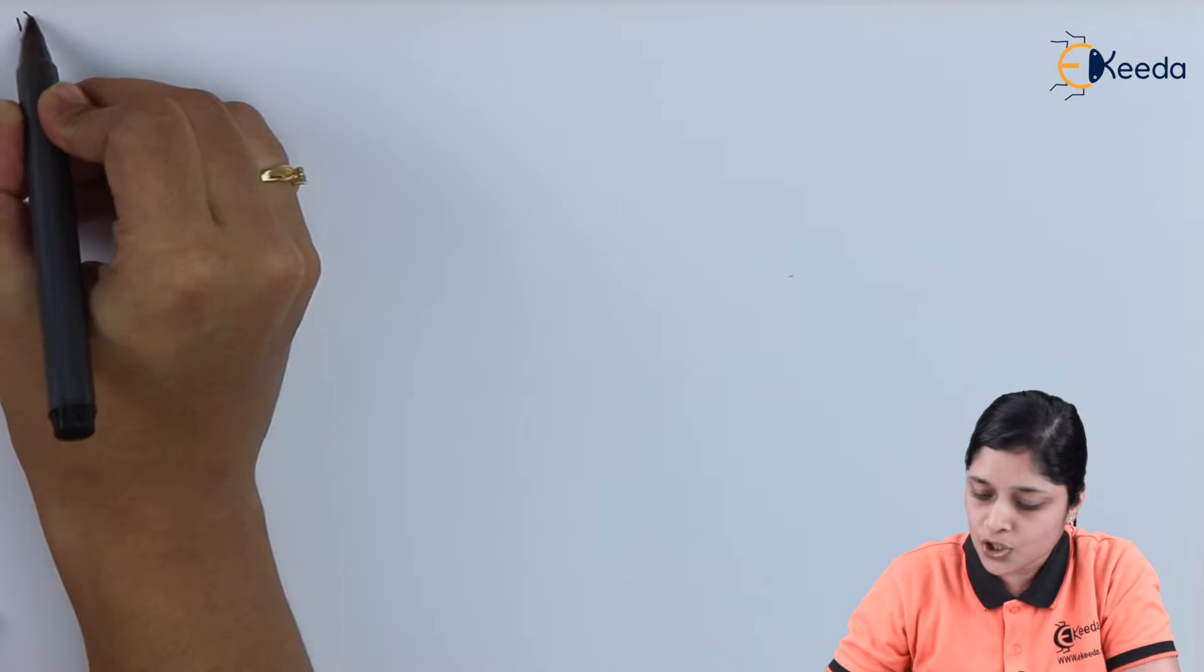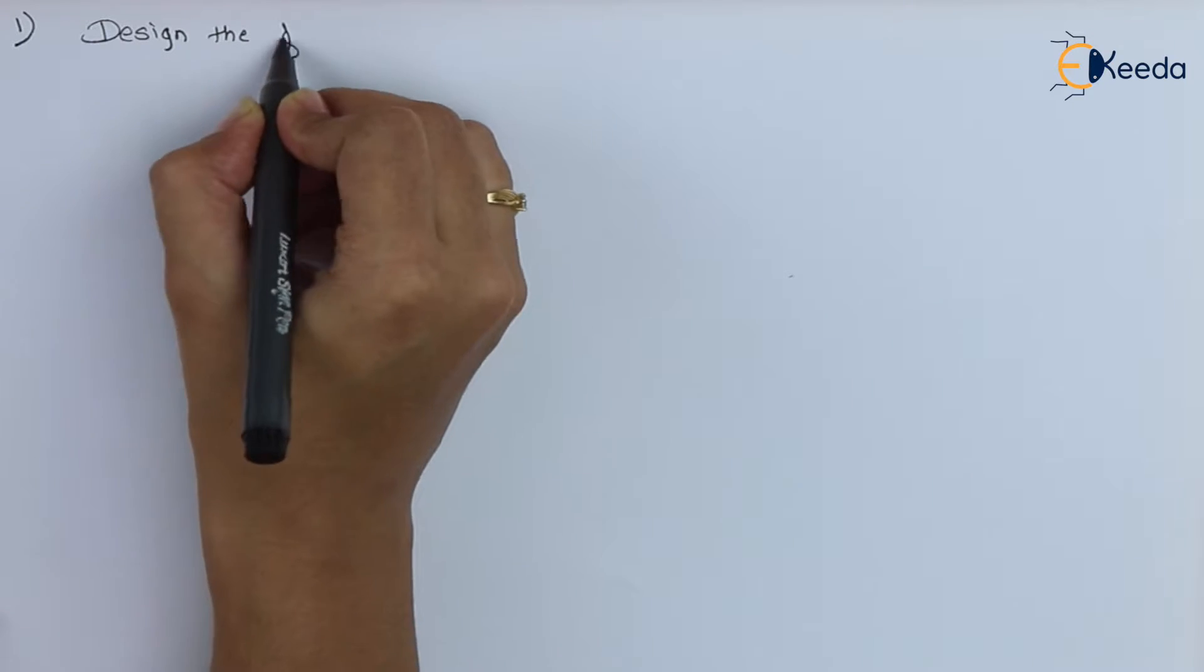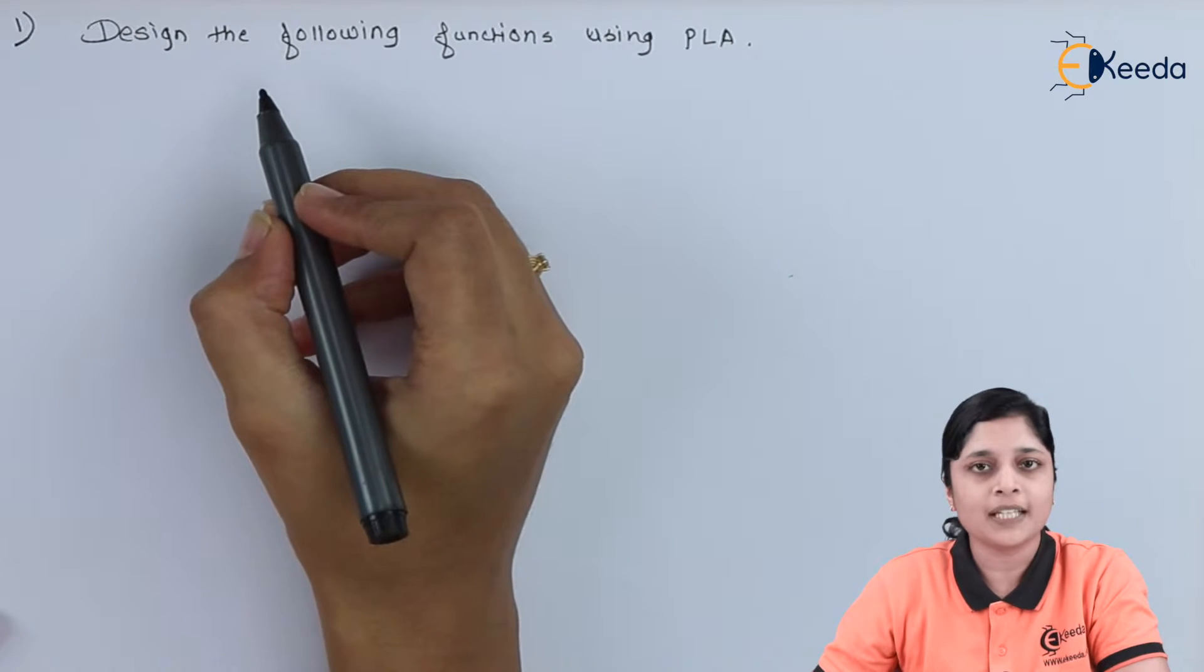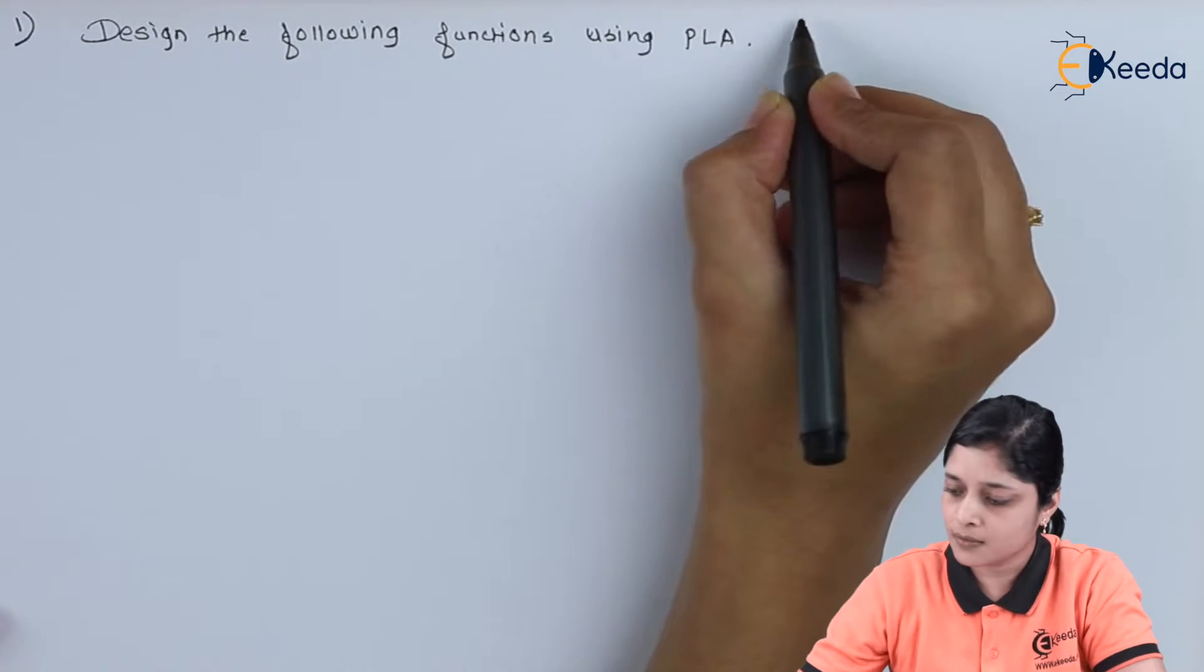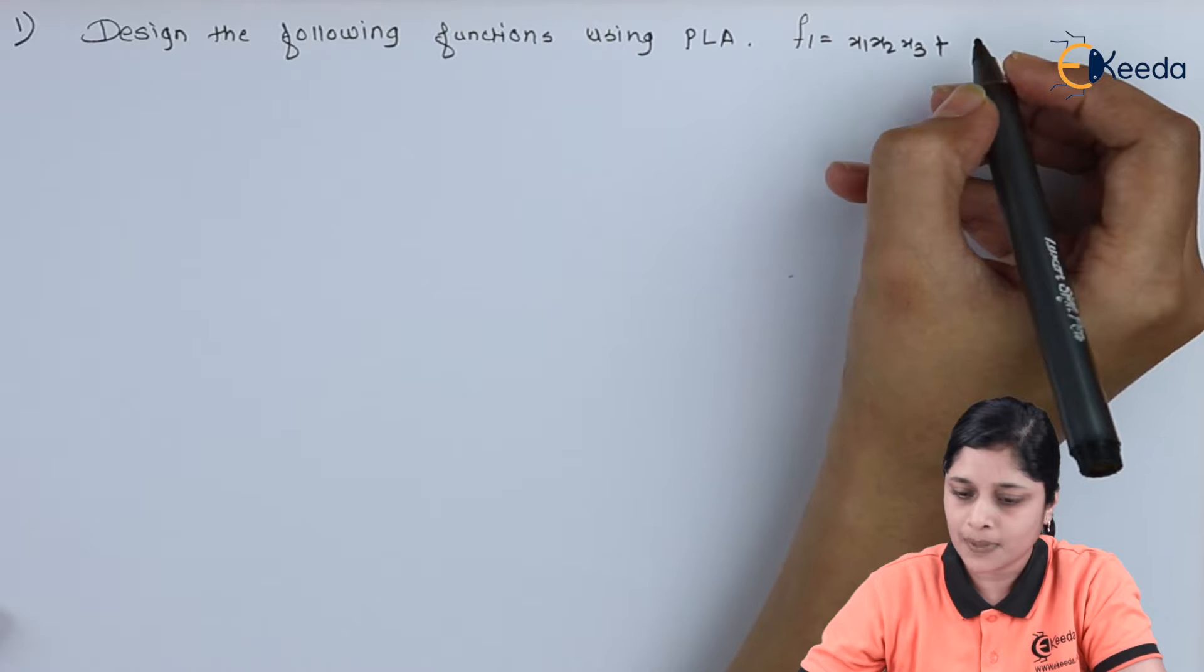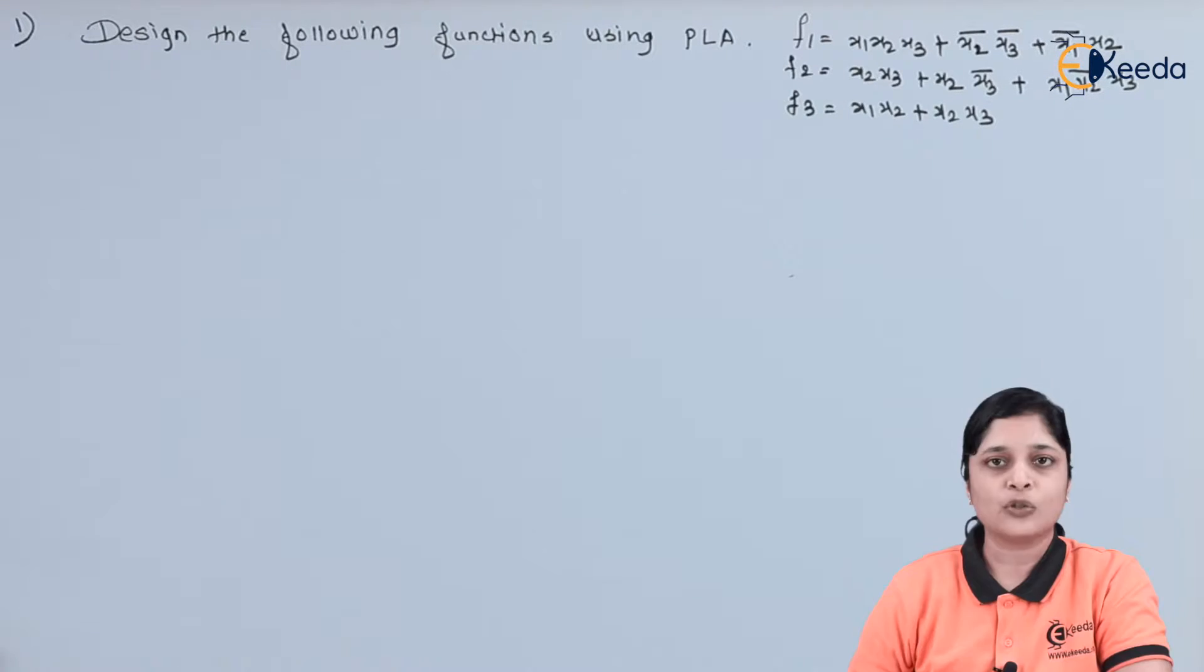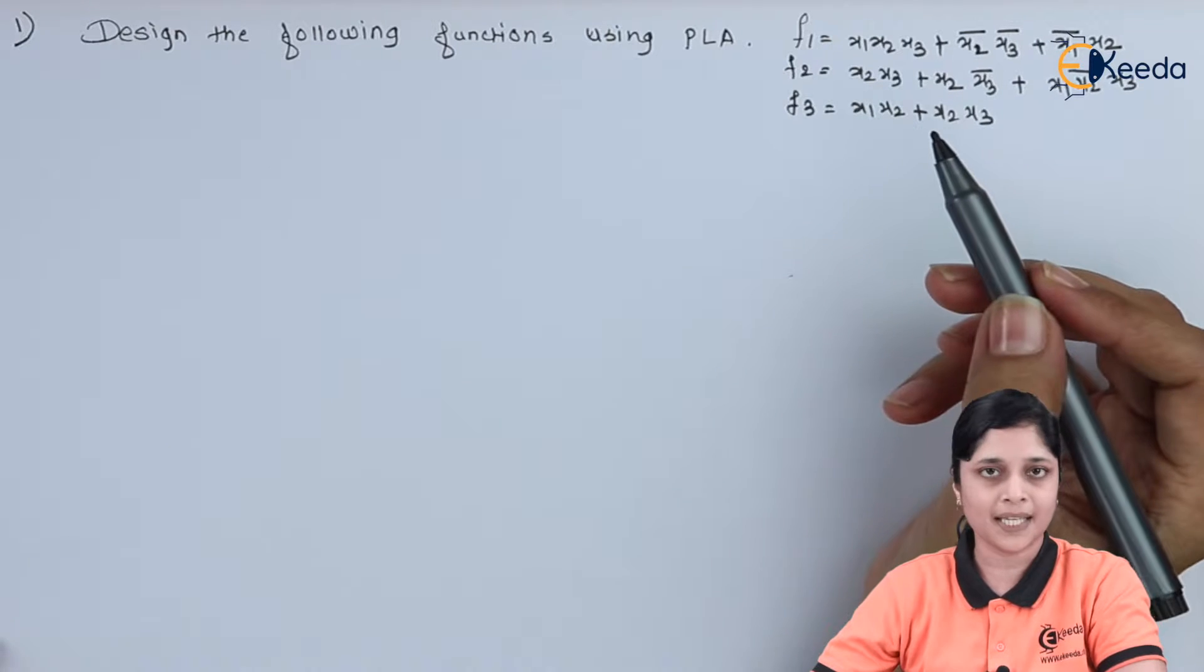The question is design the following functions using PLA. Our numerical is design the following functions using PLA. And your functions are F1 equals to X1, X2, X3 plus. So, we have three functions F1, F2 and F3. We have to implement using PLA.